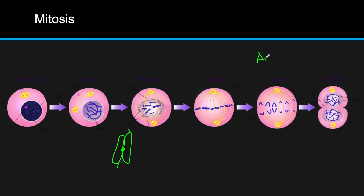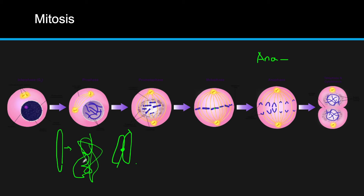Next we have anaphase — the actual separating of chromosomes. After DNA replication we have two sister chromatids connected at the centromere, forming one chromosome. During anaphase, the centromere divides and the sister chromatids are pulled apart to opposite ends of the cell. At this point they are now full chromosomes again — no longer chromatids — and we end up right back where we started.